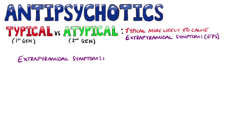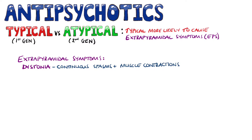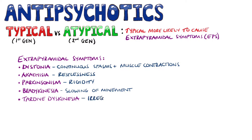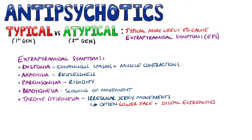Since they're mentioned a lot, the extrapyramidal side effects are movement disorders such as dystonia, where there are continuous spasms and muscle contractions; akathisia, which is restlessness; Parkinsonism signs such as rigidity and bradykinesia, which is the slowing of movements; as well as tardive dyskinesia, which is where the patient has irregular jerky movements, often in the lower face and distal extremities, and can be chronic.